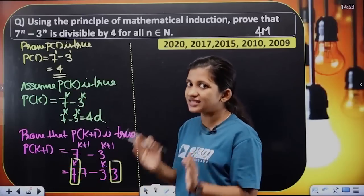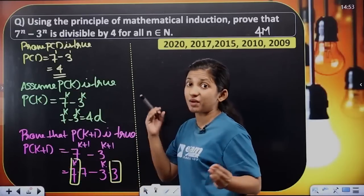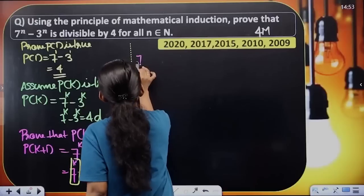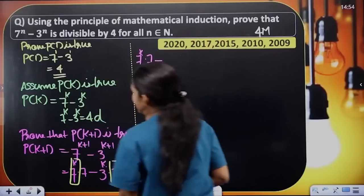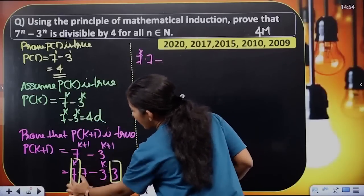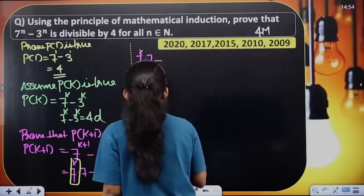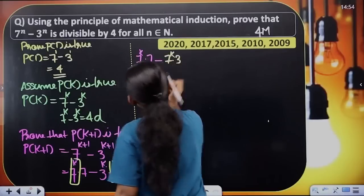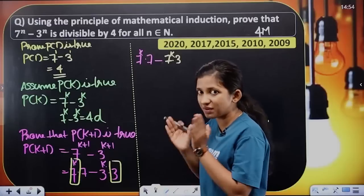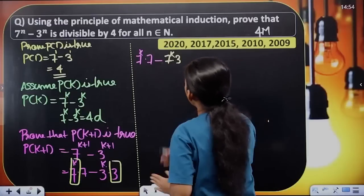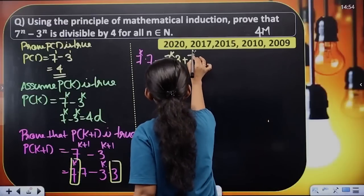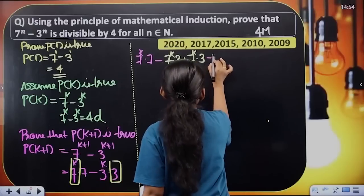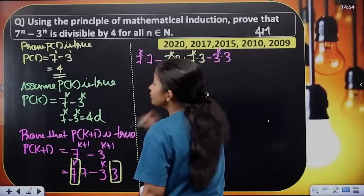We subtract and add the same term. So here 7 raised to k into 7, then we subtract the term. Here 7 raised to k and 3, then subtract and add the same term. So here 7 raised to k into 3, then the last term changes: minus 3 raised to k into 3.